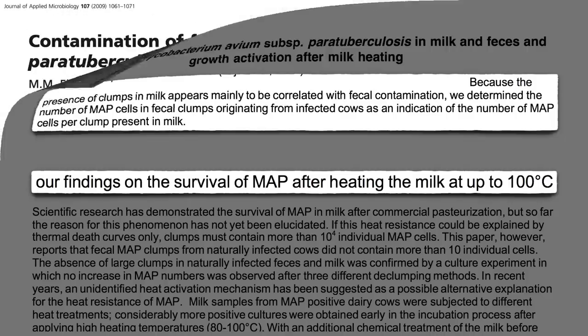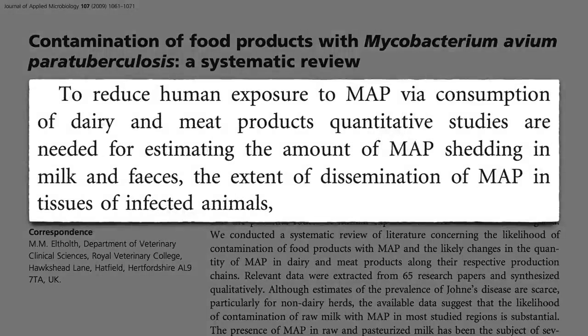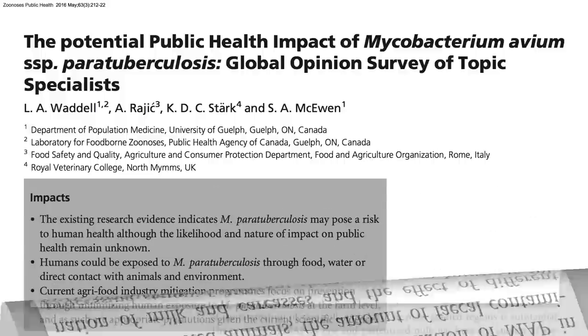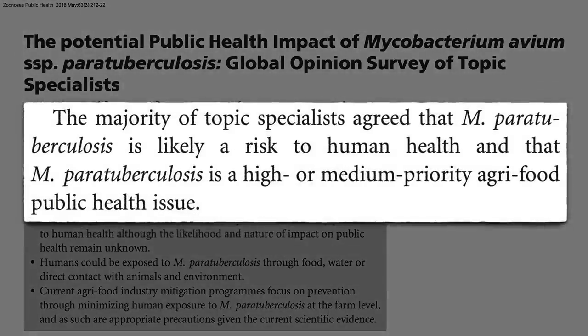Bottom line: to reduce human exposure to MAP via consumption of meat and dairy products, more studies are needed to estimate how much MAP there is in milk, meat, and feces, and how much feces is in the milk and meat, to figure out what we need to do to kill it. In the meanwhile, the majority of specialists in the field agree that mycobacterium paratuberculosis is likely a risk to human health and should be a high- or medium-priority public health issue.